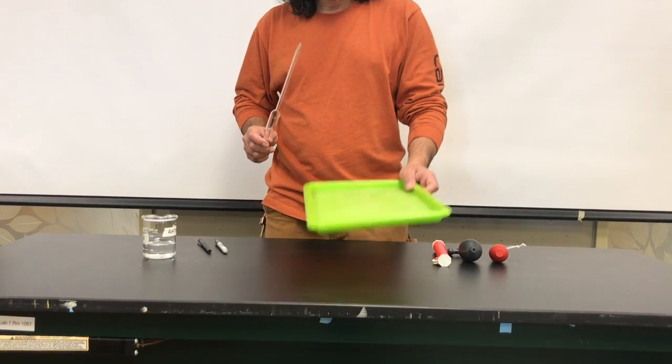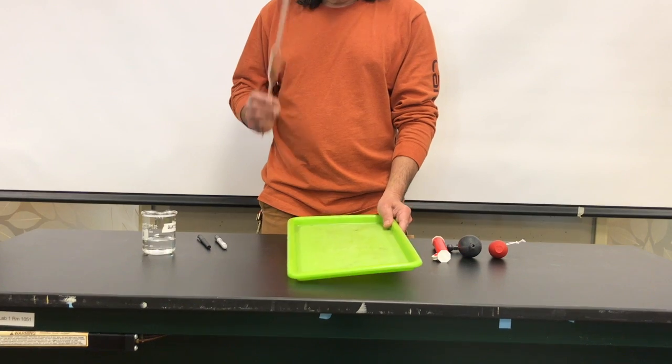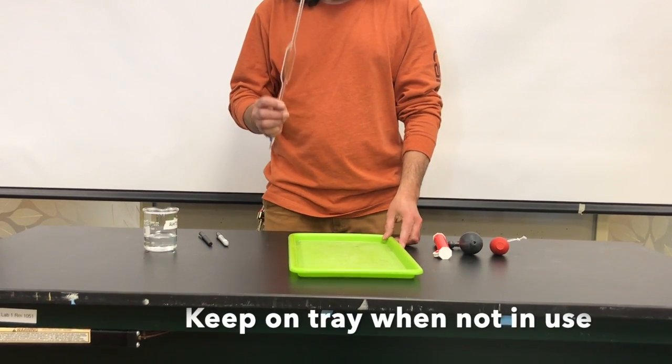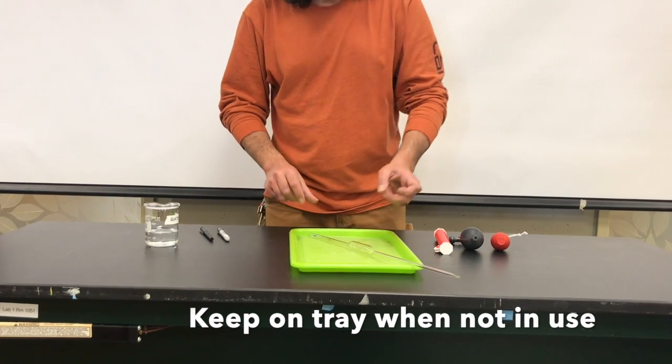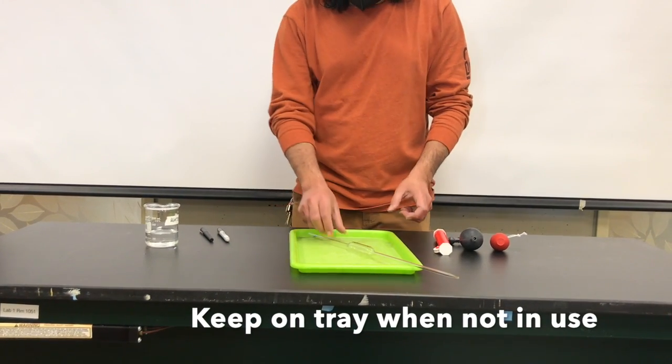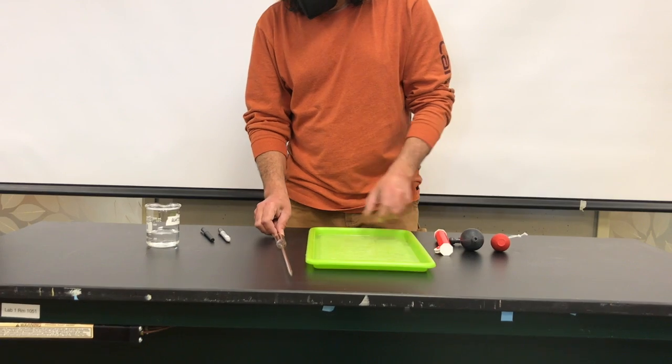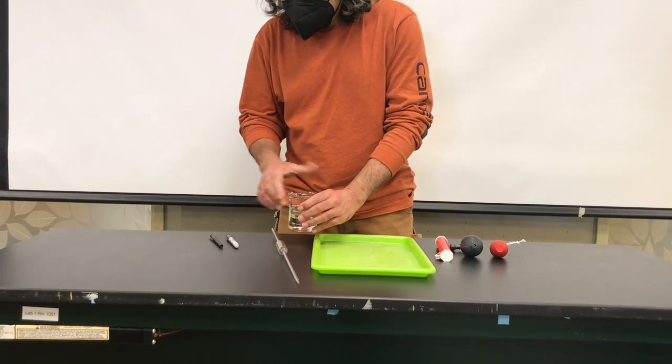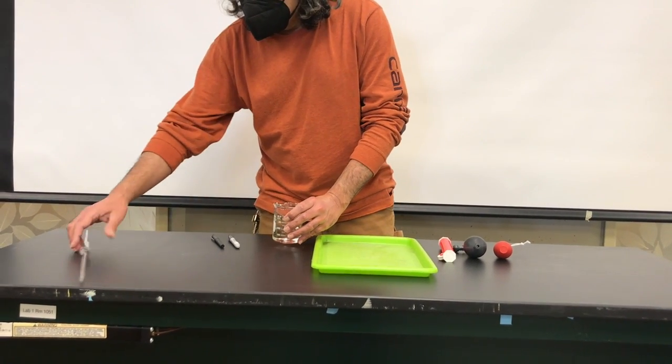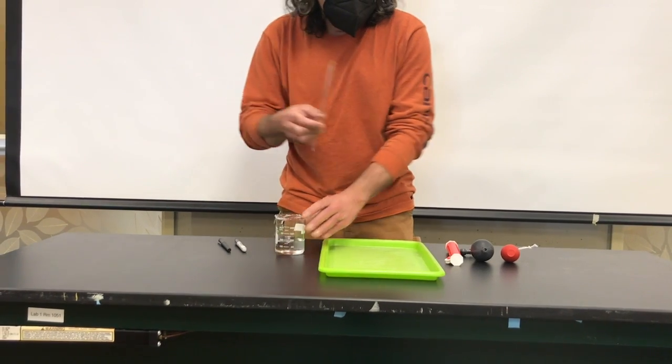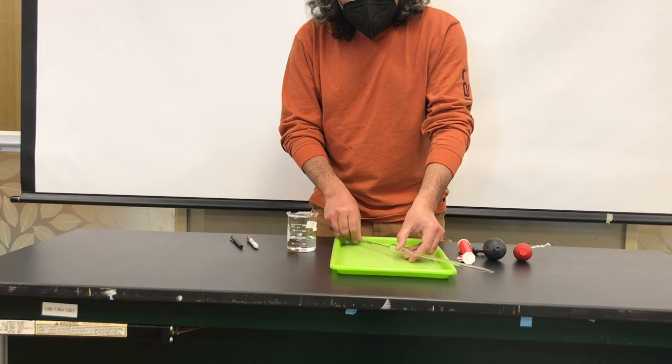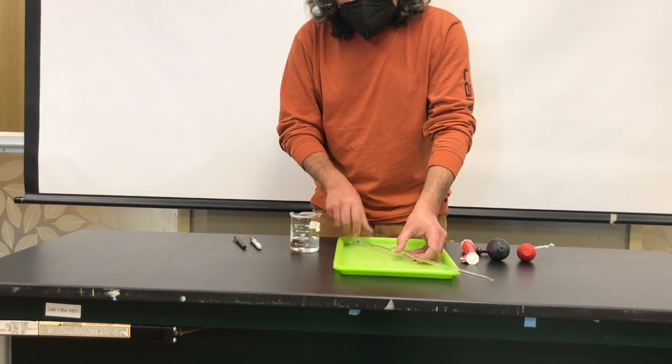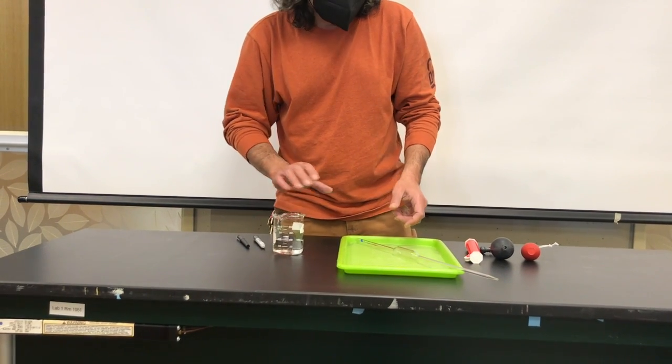We're going to give you trays so that when you're working with volumetric pipettes, we want you to always keep the pipettes on the trays. The reason for that is that these actually can roll off a table really easily and if they fall, obviously they will break. So try to remember to always keep the volumetric pipettes on the trays because they're really expensive.